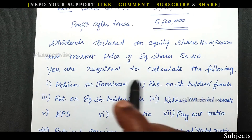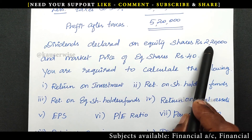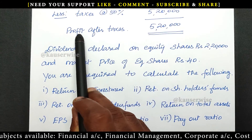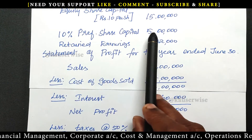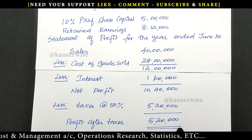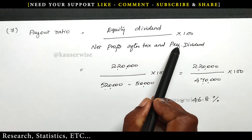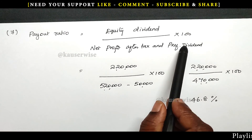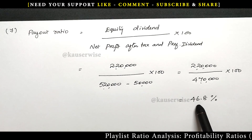See the calculation. In the adjustment, dividend declared on equity shares is 2,20,000. So payout ratio equals equity dividend divided by net profit after tax and preferential dividend, into 100. That is 2,20,000 divided by (5,20,000 minus preferential dividend 50,000), which is 2,20,000 divided by 4,70,000 into 100, giving 46.8%. This is the payout ratio.